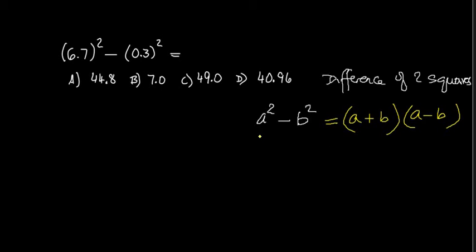We can recognize that the a here is like the 6.7 that we're squaring, and the b is like the 0.3 that we're squaring. So this is gonna be 6.7 plus 0.3 and 6.7 minus 0.3.